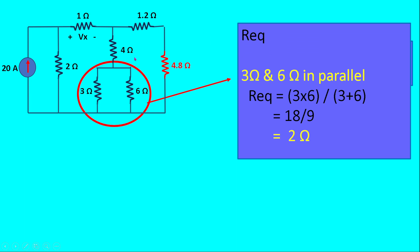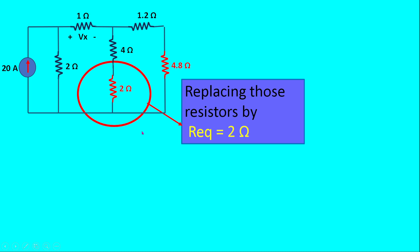Next, the 3 ohm and 6 ohm resistances are also connected in parallel. The equivalent resistance is 3 × 6 divided by 3 + 6, which equals 18 divided by 9, giving 2 ohms. We replace those two resistances with a single 2 ohm equivalent resistor.